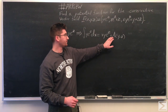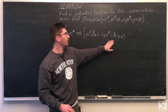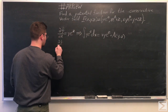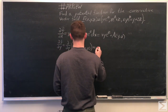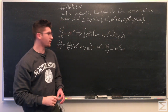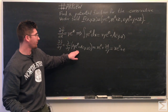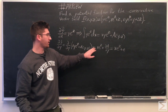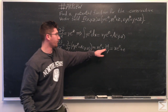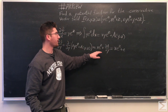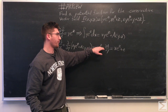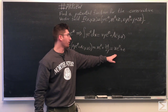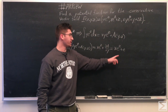Now if we take the partial derivative of this — which equals f — with respect to y, we should get something equal to the y-component. That gives us x times e to the z, plus the partial derivative of a(y,z) with respect to y. By definition, the partial derivative of f with respect to y equals the y-component, so we can set these equal. This tells us that the partial derivative of a with respect to y must equal z.